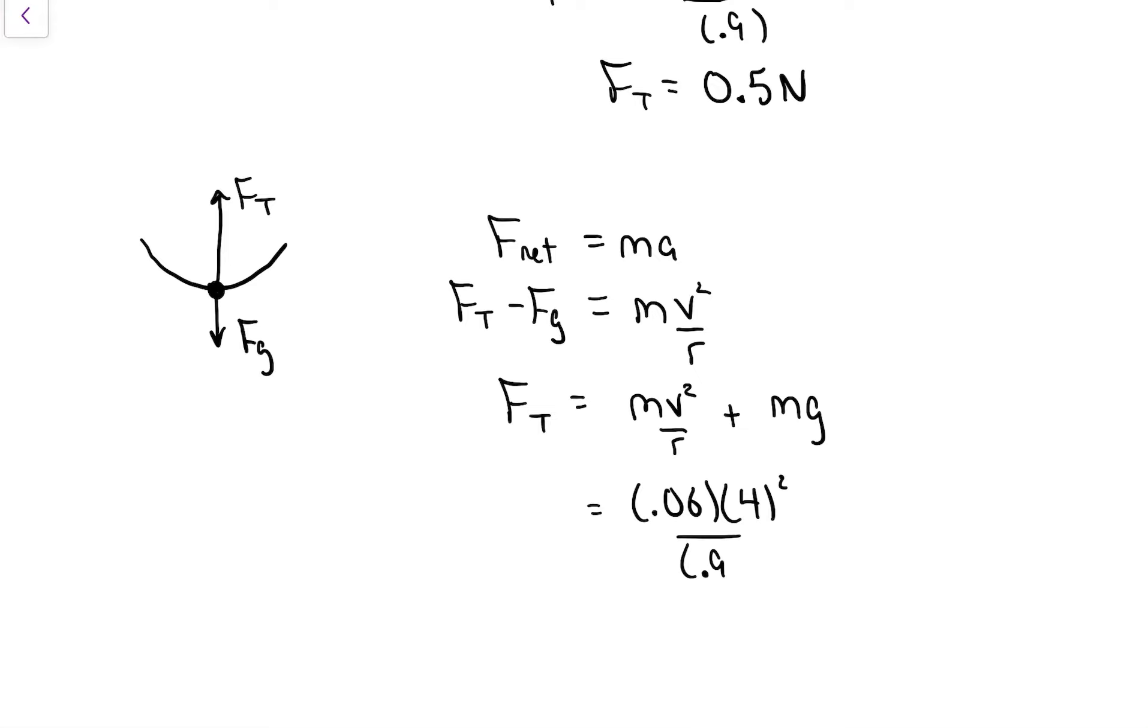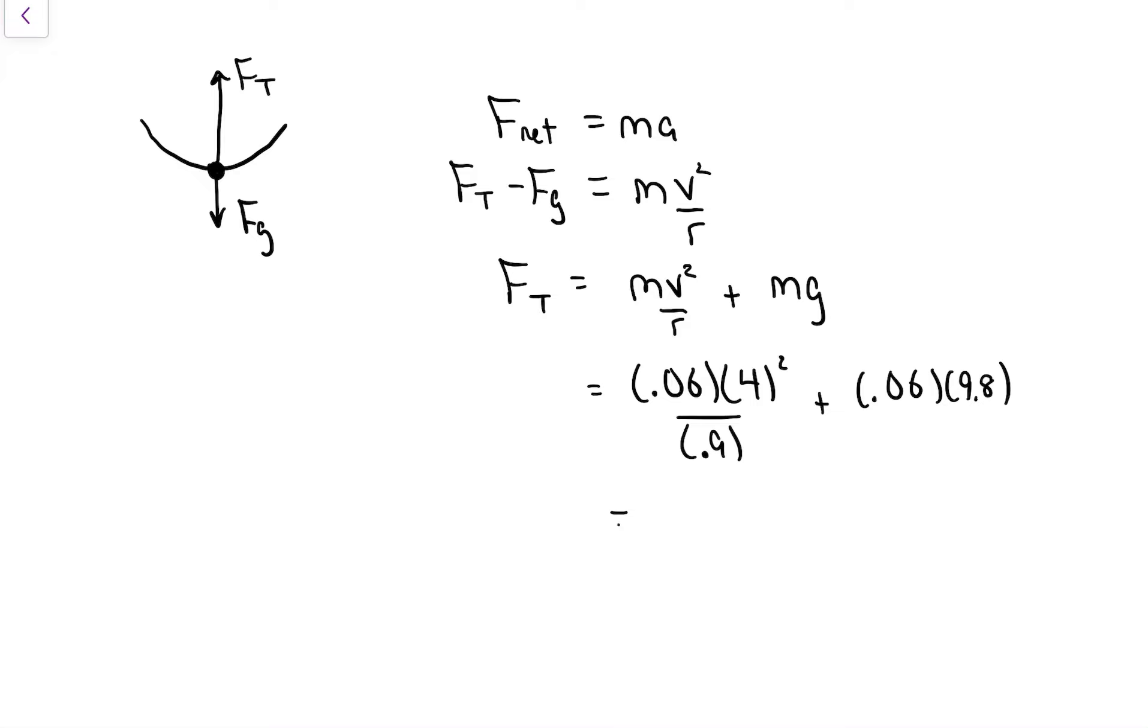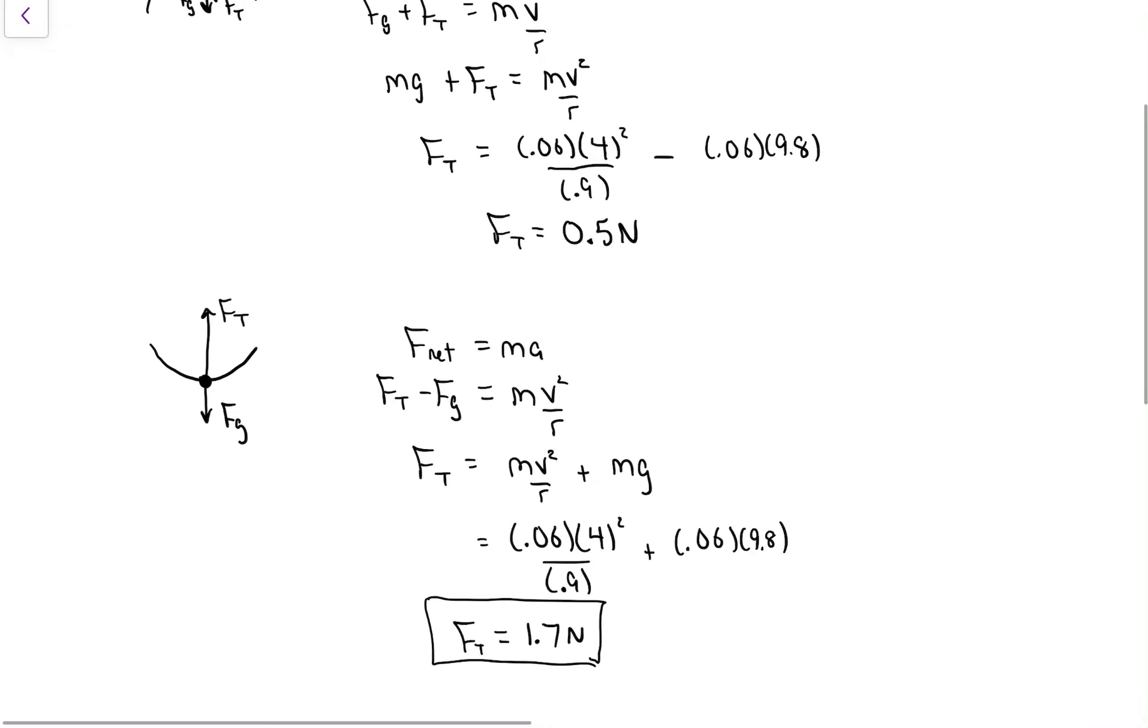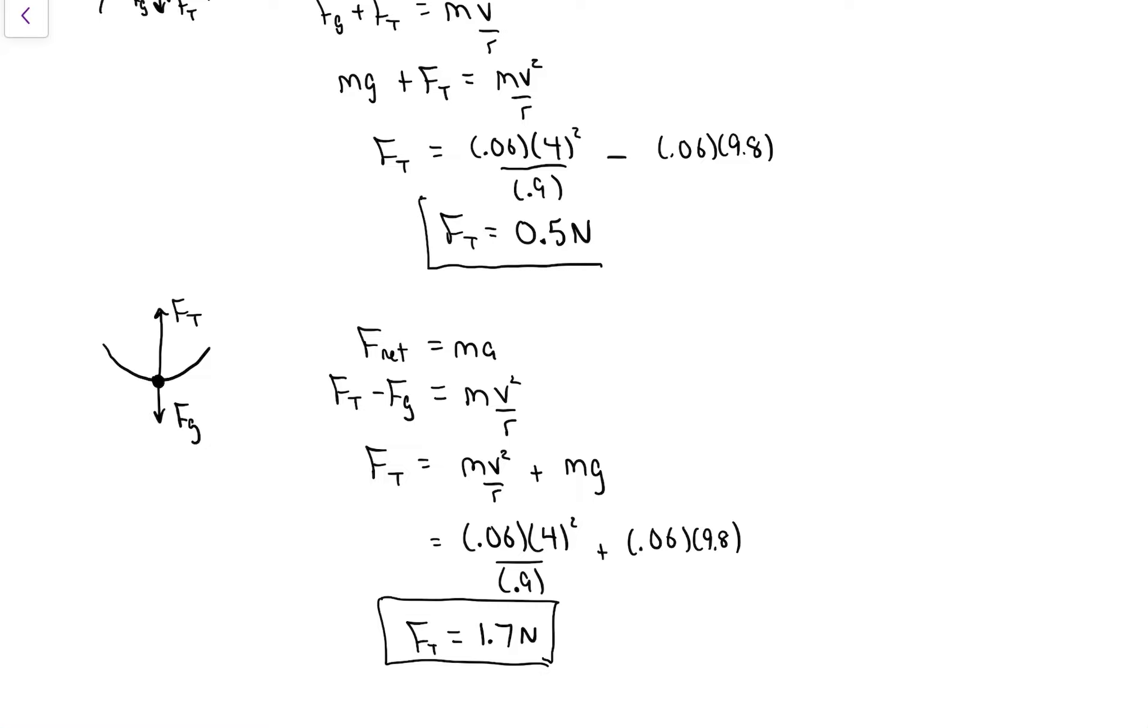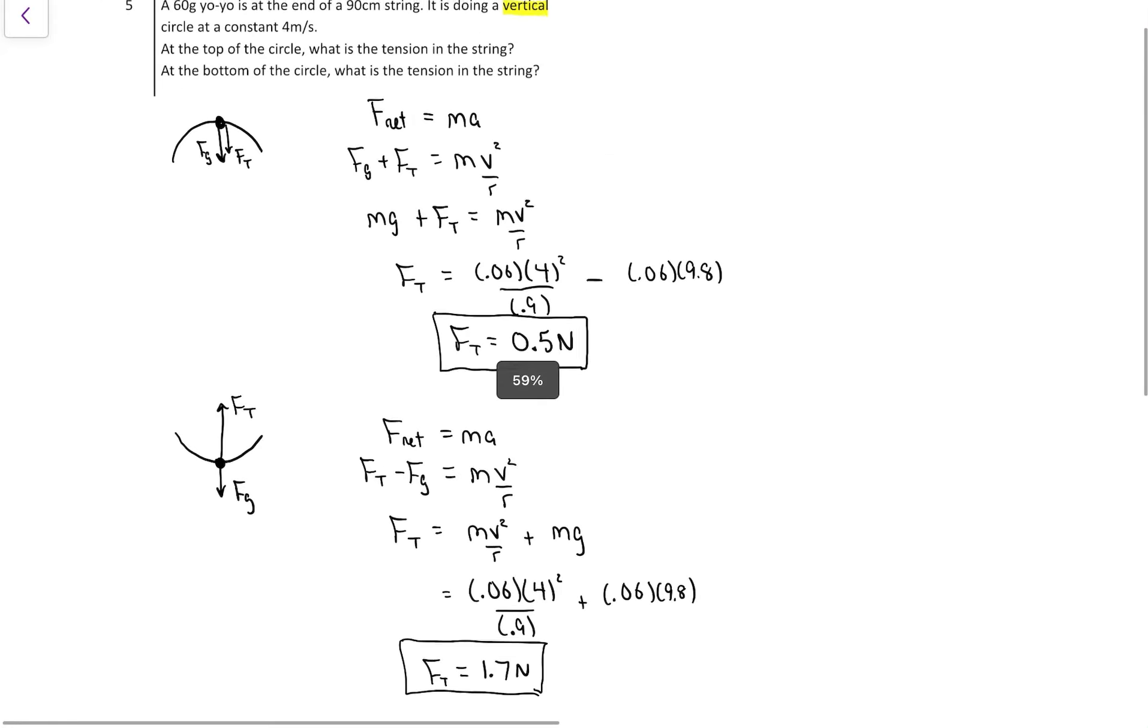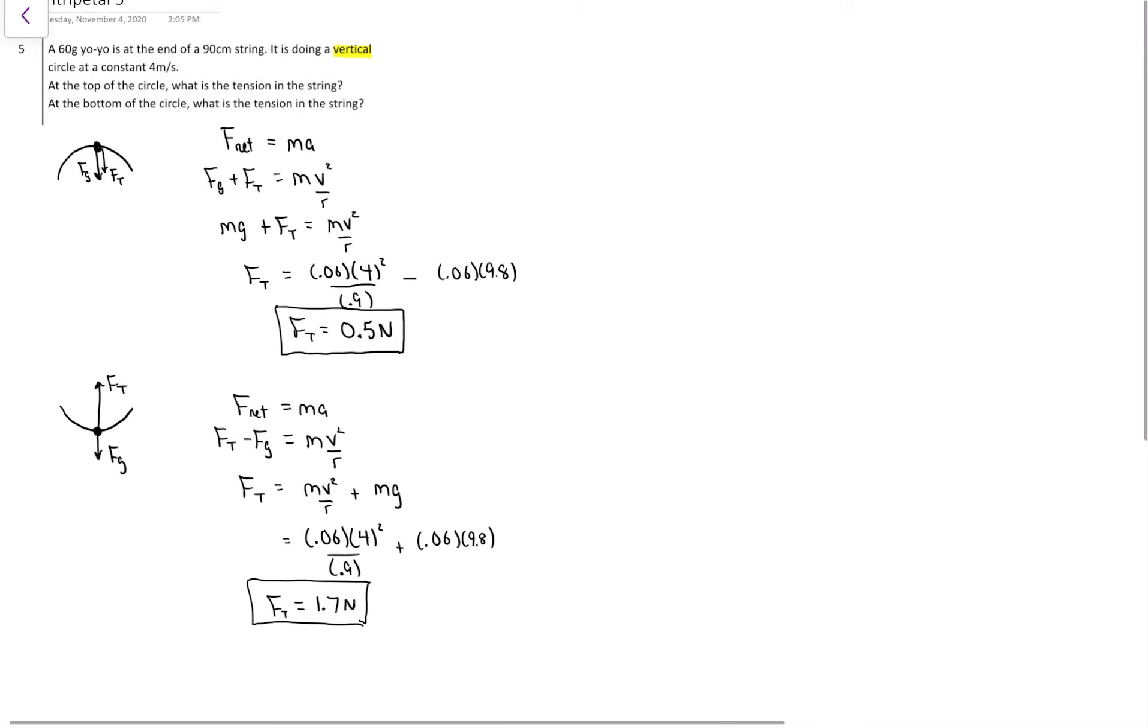This is a fundamental thing about vertical circles that we'll see and we'll use to solve problems. When an object's going in a vertical circle, when it's at the bottom, gravity is in the wrong direction. So the tension or whatever the upward force is has to match gravity and then some to get it to accelerate up into that circular motion. So at the bottom we're always going to have a tension that's larger.